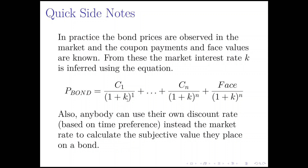Also, this interest rate K doesn't necessarily have to be the market interest rate. You can use your own subjective discount rate based on your time preference instead of whatever the market rate is, to calculate your own subjective value of the bond. So K can be any interest rate you want to use to figure out what the bond is worth.